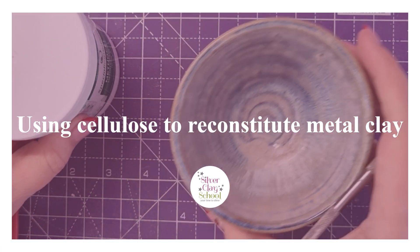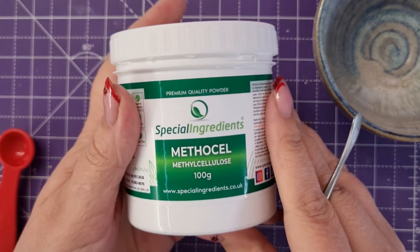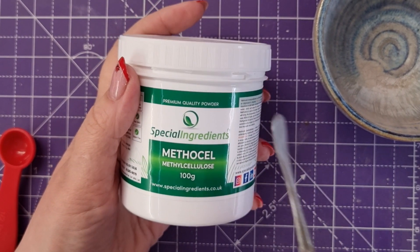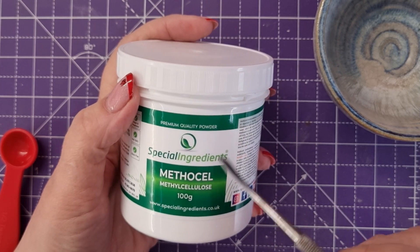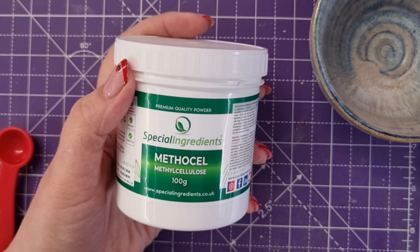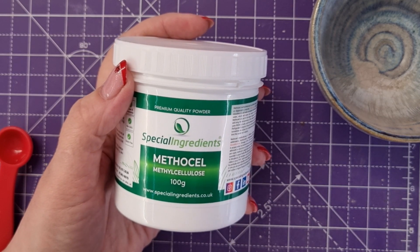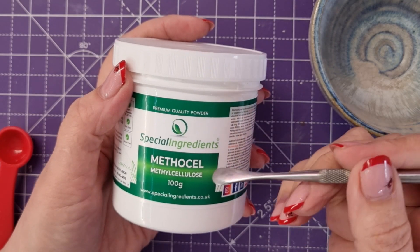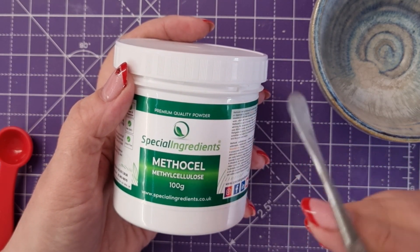Today I'm going to talk to you about this stuff here: methylcellulose, which is essentially an organic material that is added to silver clay and other base metal clays to give it that clay consistency. This is the binder that they use.